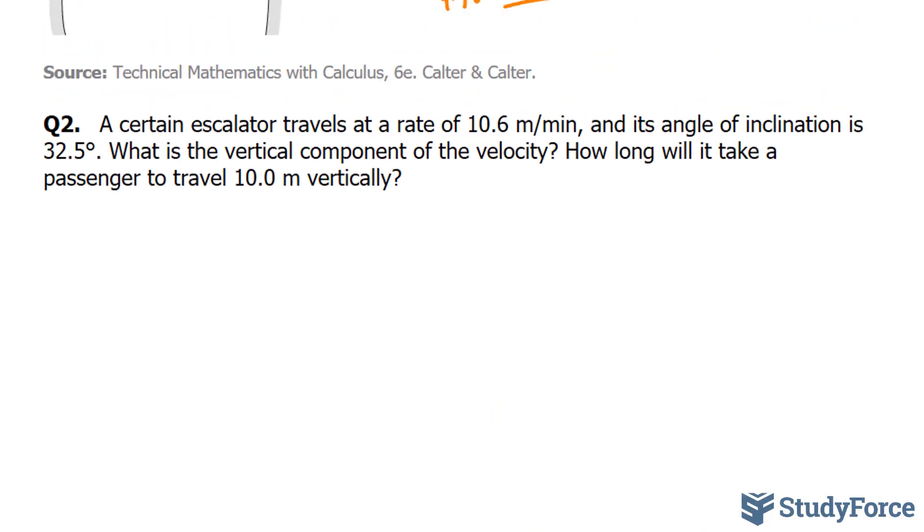Now we'll move on to question two. A certain escalator travels at a rate of 10.6 meters per minute, and its angle of inclination is 32.5 degrees. What is the vertical component of the velocity? And how long will it take a passenger to travel 10.0 meters vertically? Let's do an illustration. So we have an escalator, found at malls, and it travels at a rate of 10.6 meters per minute at 32.5 degrees.